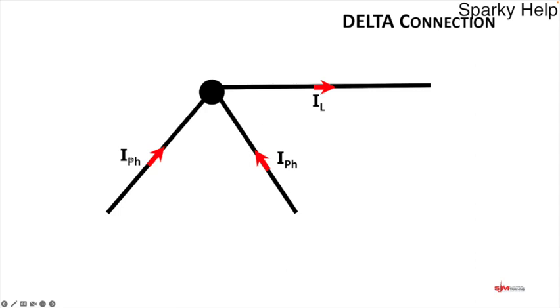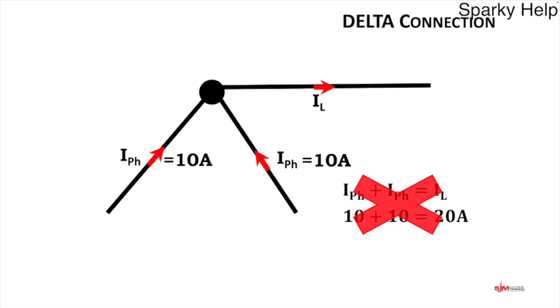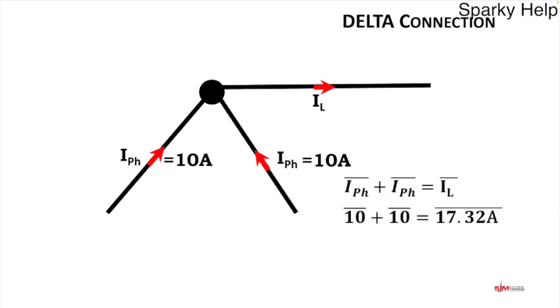The current goes in and a current comes away. If we were earlier on in our career, Kirchhoff would have told us if we had 10 amps and 10 amps, you would assume from your early knowledge that that phase plus that phase equals IL, and therefore 10 plus 10 is 20. But what we do know is that's wrong. That's not correct because remember these are out of phase.